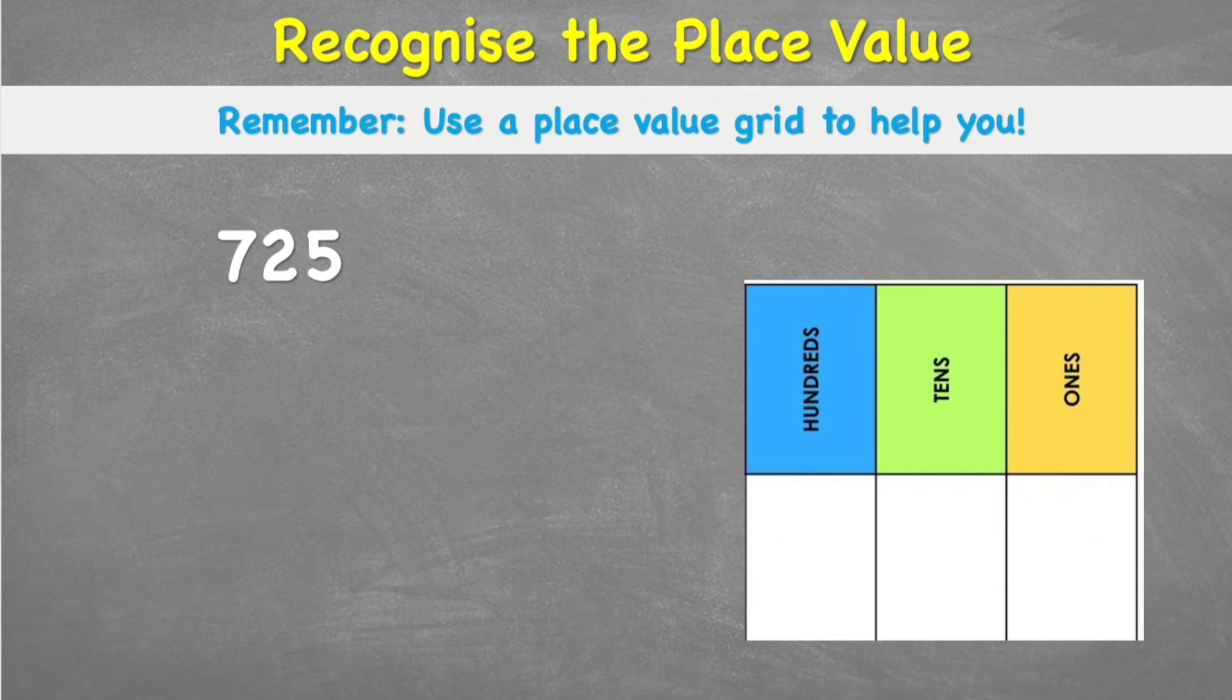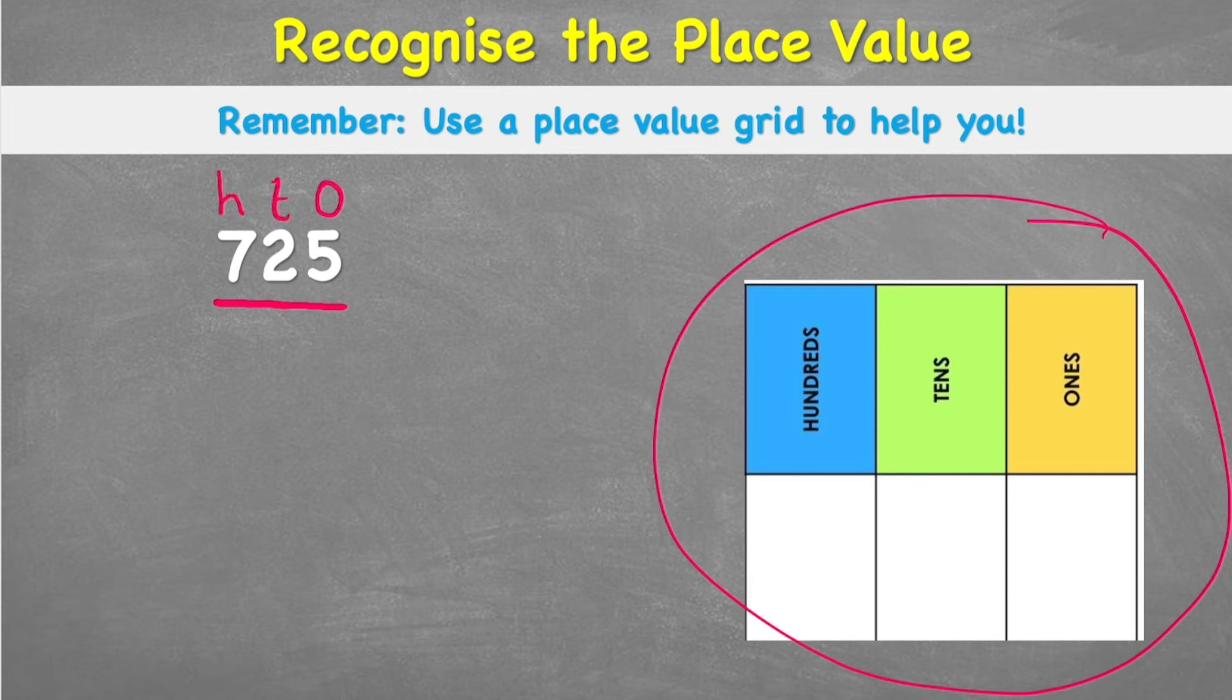So what we can do is just look at our 725 and create our own place value chart above it. We can say I have 5 ones, 2 tens, and 7 hundreds. And organizing your work and your numbers like this with the place value signs over the top is a really good habit to get into now.